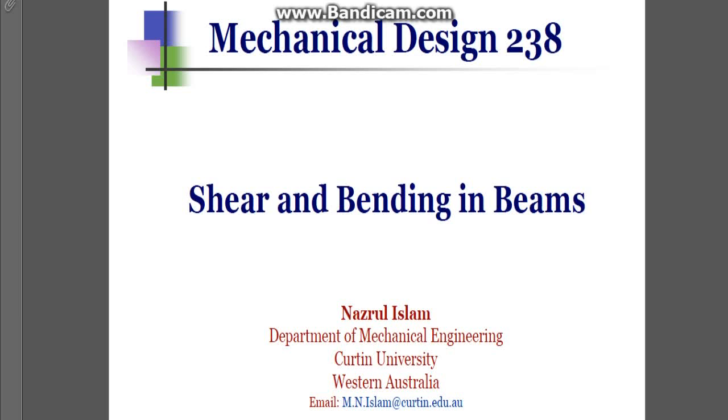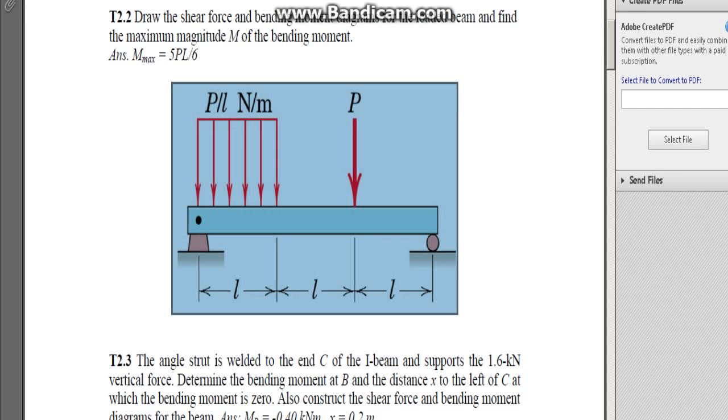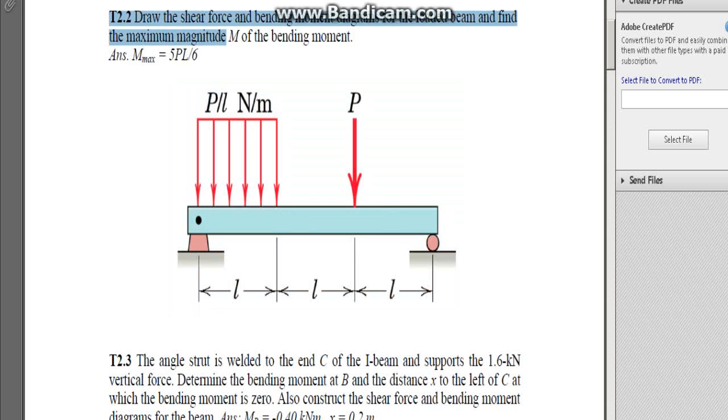The question was devised by Dr. Nazarela Slam from the Department of Mechanical Engineering at Curtin University of Western Australia. The question today is 2.2 where we are looking at the maximum magnitude on a beam and where it is located.